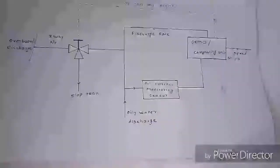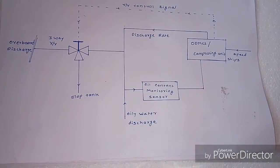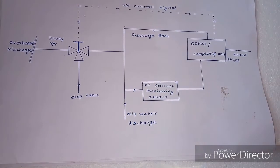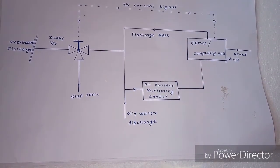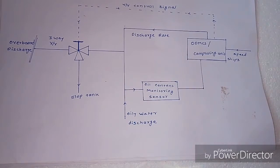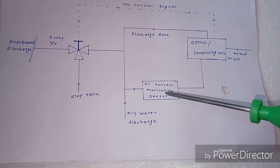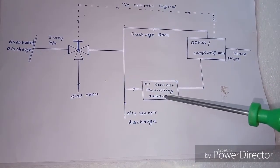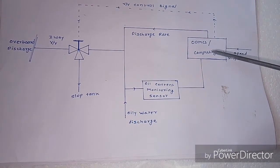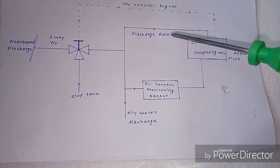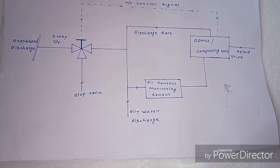Hello friends, today we are going to learn the actual ODM-CS block diagram. The ODM-CS consists of four parts: Oil-Contained Monitoring Sensor, ODM-CS computing unit, discharge rate, and 3-way valve.